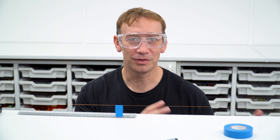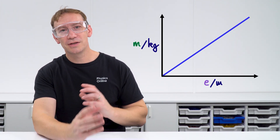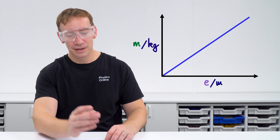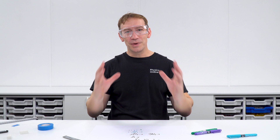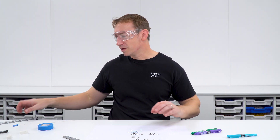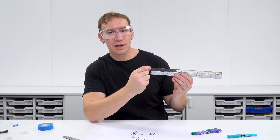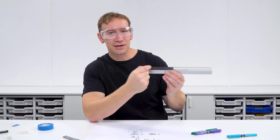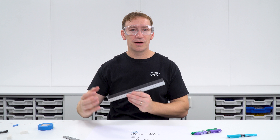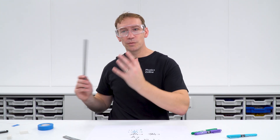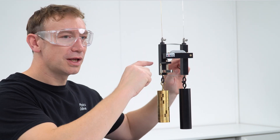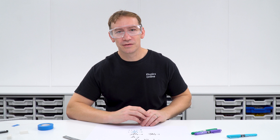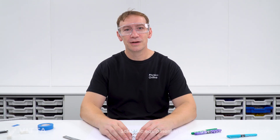With data for mass and extension plotted on a graph, the two quantities are directly proportional and we take the gradient of that line to work out the Young Modulus using the equation from earlier. The biggest limitation with standard equipment is that we're measuring extension only to the nearest millimeter, giving a large percentage uncertainty. This can be overcome using a vernier scale or Searle's apparatus to measure smaller extensions.